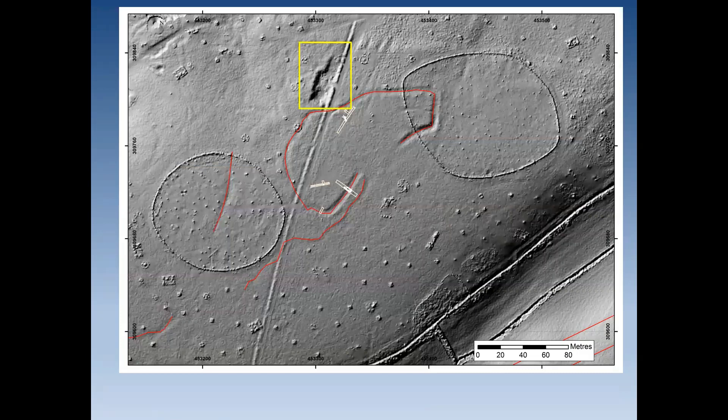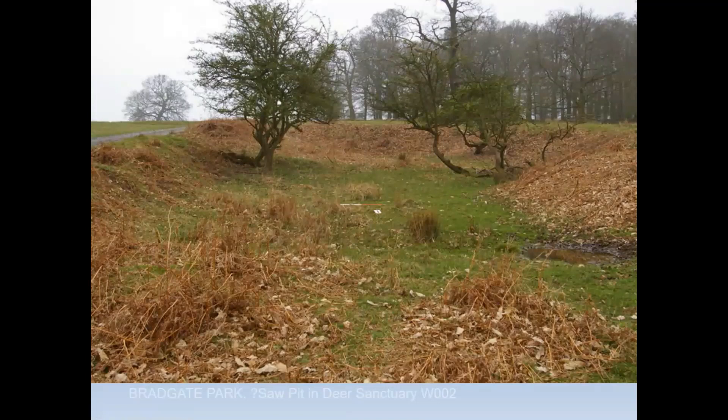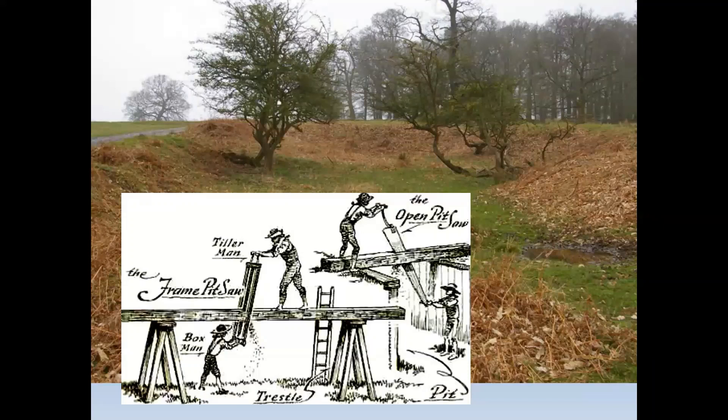To the north of the Iron Age enclosure, a large square angular deep feature was found — this turned out to be a saw pit, very much part of the later history of Bradgate Park.